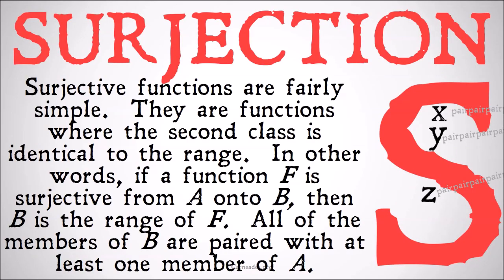Surjection is a property of a function. Surjective functions are fairly simple compared to the other ones we've looked at. These are functions where the second class is identical to the range — the class that it's mapped onto is identical to the range, i.e. every member is used. If a function f is surjective from A onto B, then B is just the range of f.